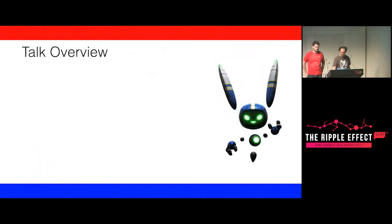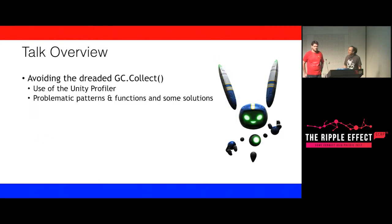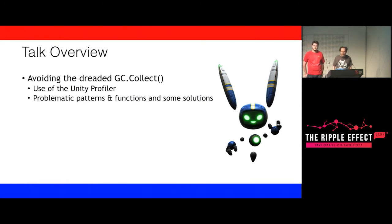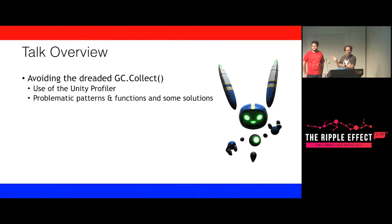What are we going to talk about? We're going to talk about avoiding garbage collection inside Unity, because that was the single biggest problem we had on Symphony. We'll show you how to use the profiler to find and diagnose those problems, patterns that were problematic in Symphony, and how we resolved those patterns. There's more than I can cover in this talk, so at some point there will be a blog post.